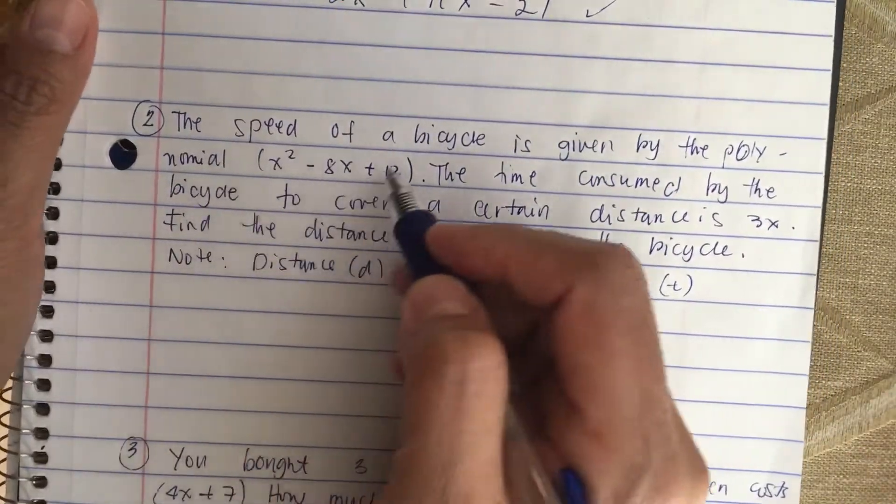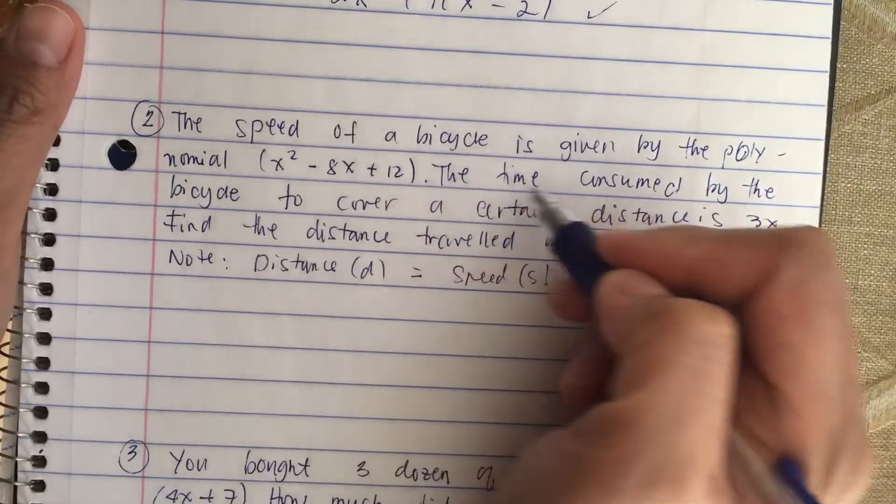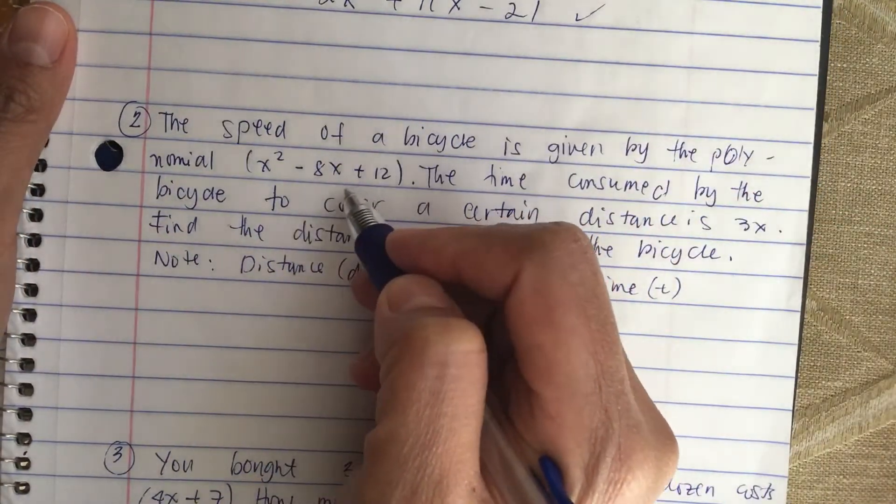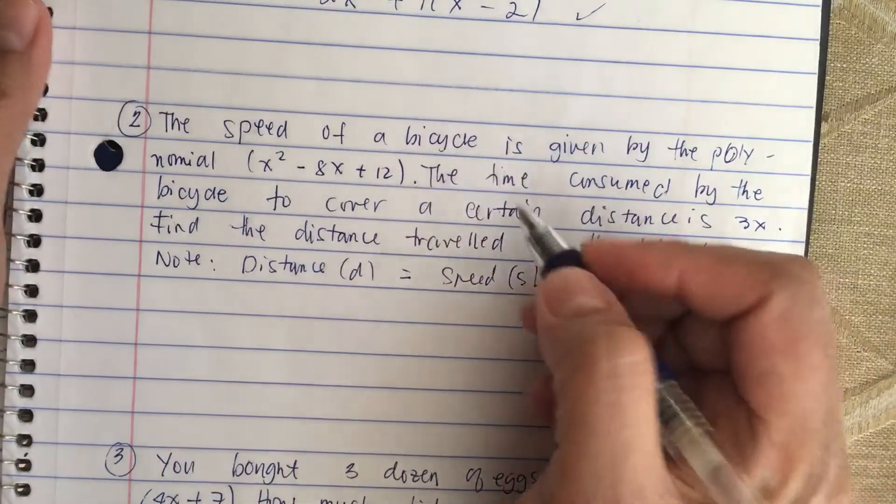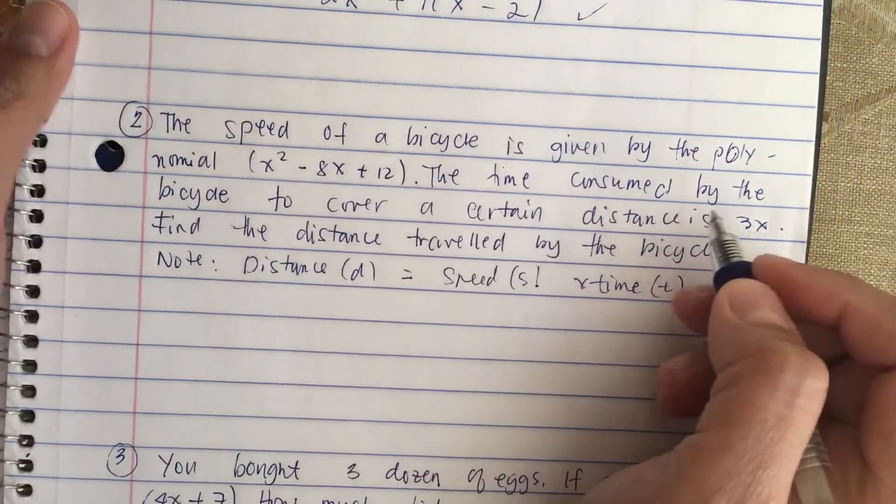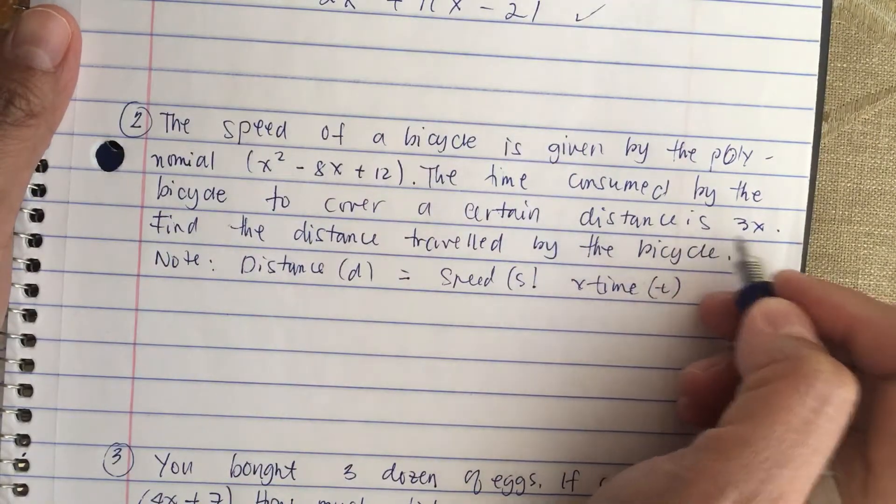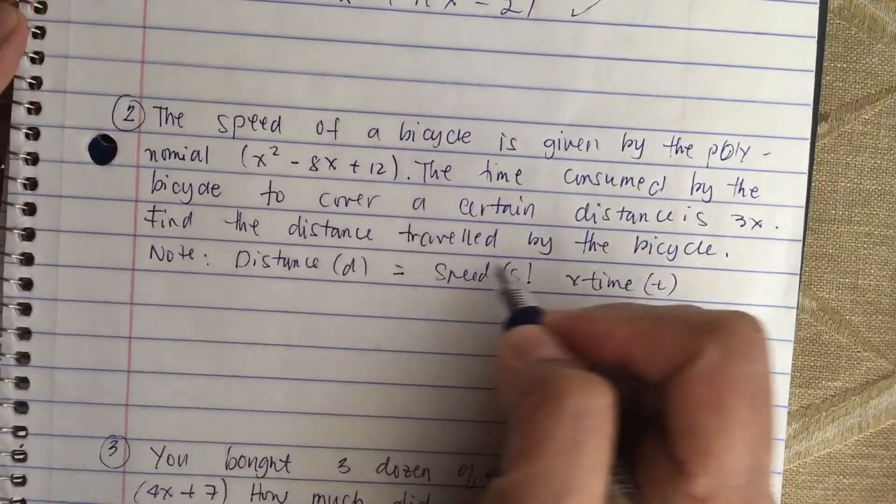The speed of a bicycle is given by the polynomial x squared minus 8x plus 12, and the time consumed by the bicycle to cover a certain distance is 3x. Find the distance traveled by the bicycle.